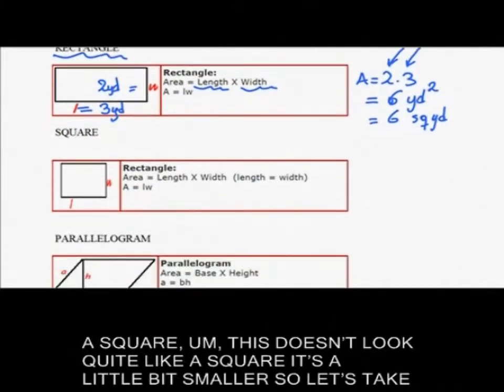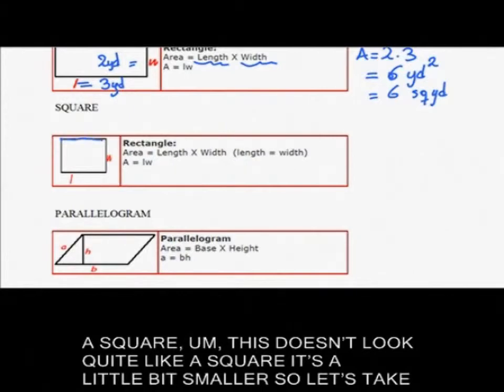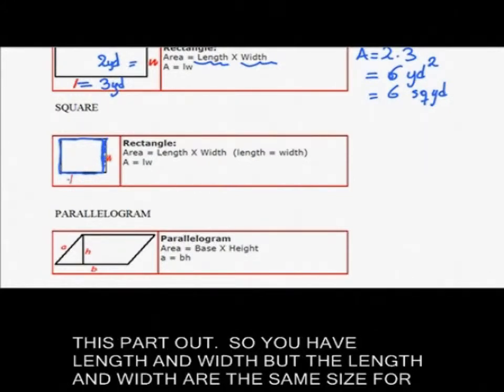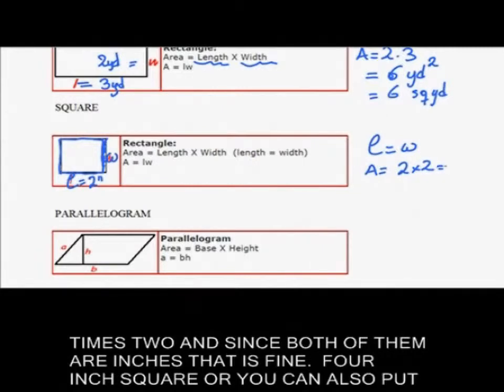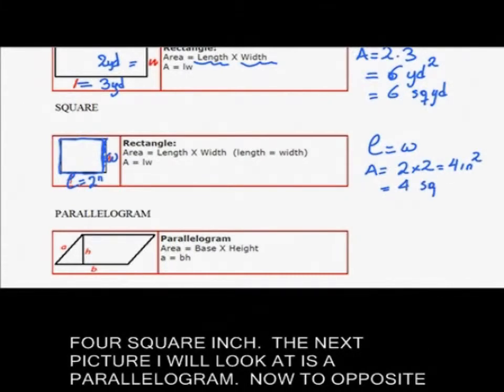Now if we are doing a square, this doesn't look quite like a square. So you have length and width, but the length and width are the same size for the square. So the area, let's say if I have two inches here, the area will be two times two, and since both of them are inches that is fine, four inch square or you can also put four square inch.